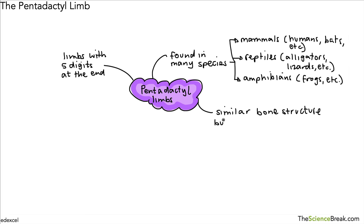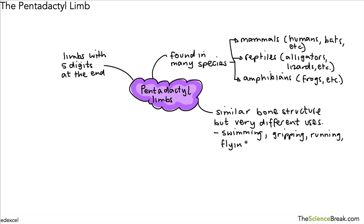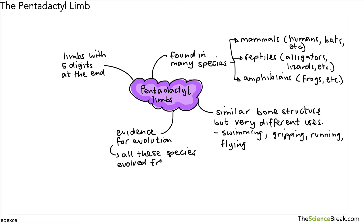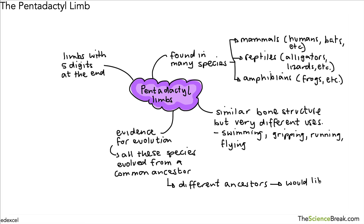The key thing about the pentadactyl limb is that it is a similar bone structure but with very different uses — swimming, gripping, running, and even flying. This gives us evidence for evolution. It suggests that all these species evolved from a common ancestor. If these limbs had not evolved from a common ancestor, we would likely have a very different bone structure for all these different living things.